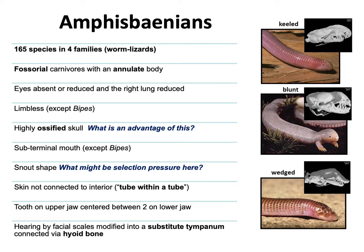With the exception of the very bizarre Bipes, which has forearms but lacks hind limbs. I remember seeing this as a kid in a book and thinking it was the weirdest thing I'd ever seen — I'd like to see one in the wild, but I never have. One interesting thing about this group is the variety in their skull ossification — very heavily ossified skulls, meaning very thick bone.